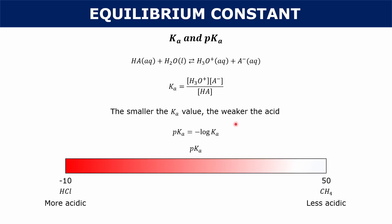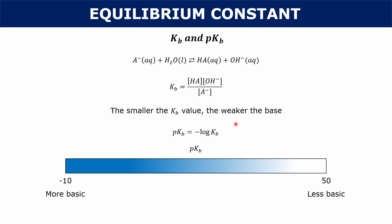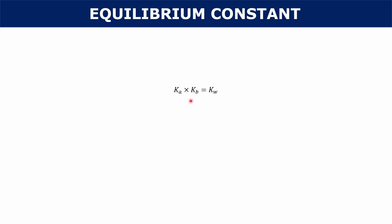Ka and Kb are really similar — Ka represents the acid side of the story and Kb represents the base side. The last thing to cover is the relationship between Ka and Kb: Ka multiplied by Kb equals Kw. So at 25 degrees Celsius, Ka times Kb always equals 1 times 10 to the negative 14. Sometimes you'll be given a Kb value but need to find the Ka value, and this relationship will help you do that.